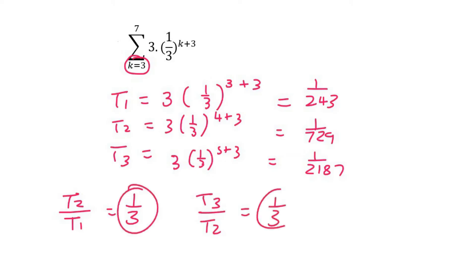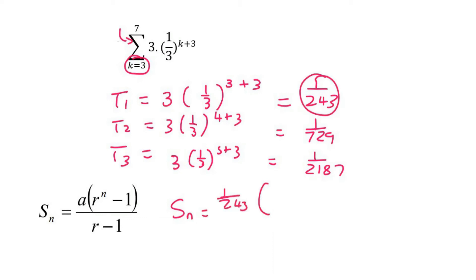Now we know that the sigma notation symbol means the sum of. So we need to get the sum formula for a geometric pattern. We're looking for the sum of a certain number of terms. Now, a is term 1, so that's 1 over 243. And then r, we said, was a third.